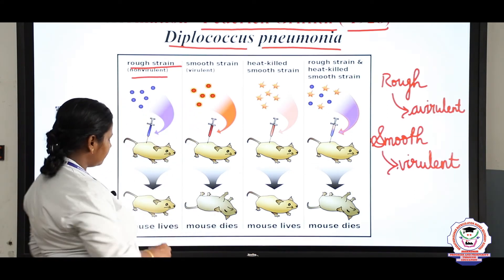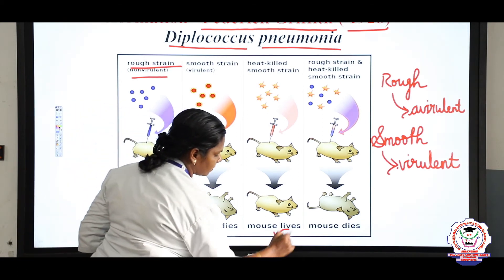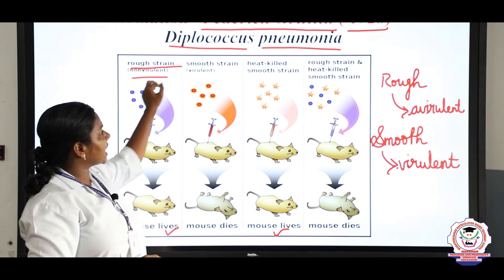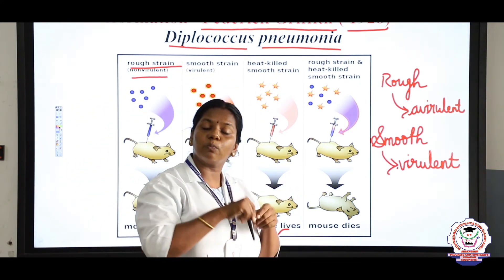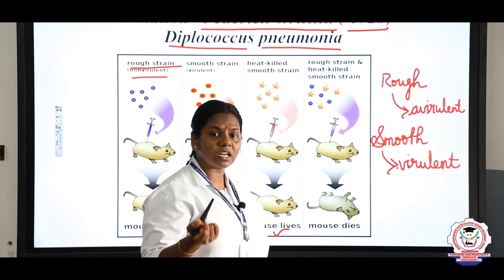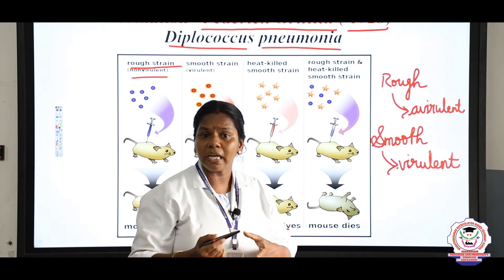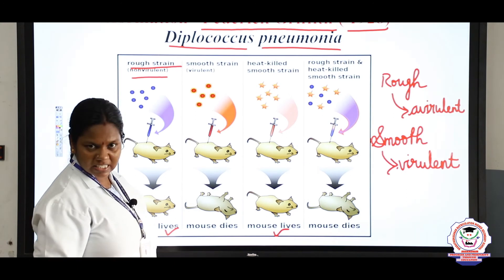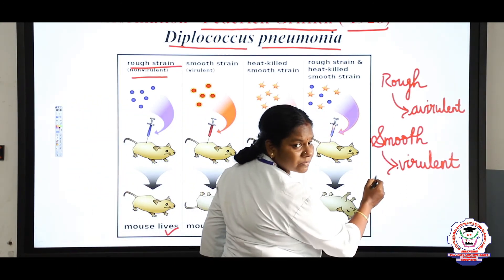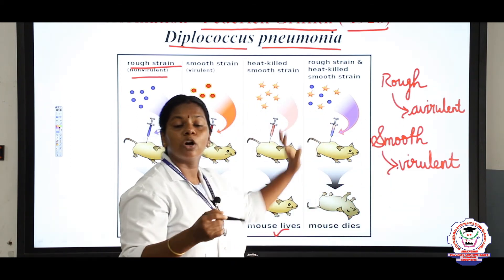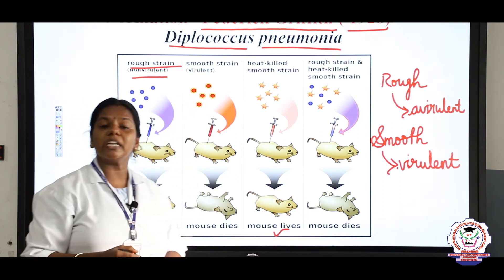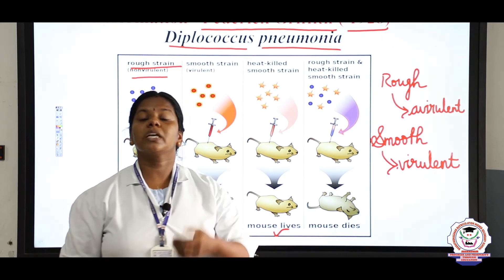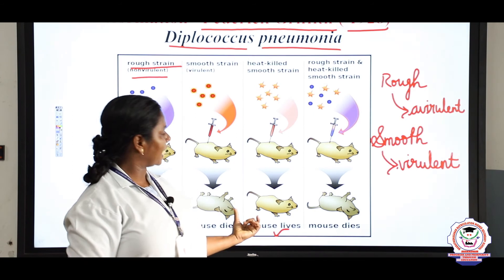He then mixed the rough strain and the heat-killed smooth strain and injected both into the mouse. You would think that since both are avirulent, the mouse must be alive — but the mouse died. From this experiment, Griffith concluded that something from the smooth strain, some genetic material, had been transformed into the rough strain and made it virulent. This is the transformation principle by Frederick Griffith in the year 1928. It is an important five-mark question: give the experiment to prove the transformation principle of Griffith.